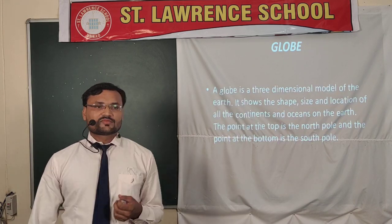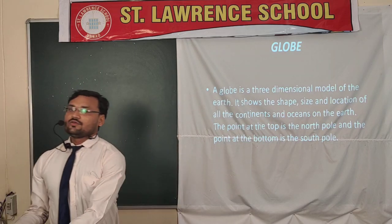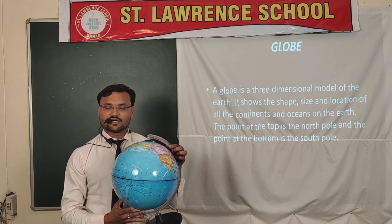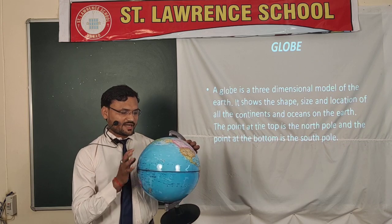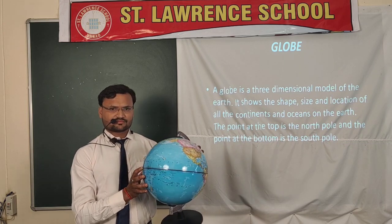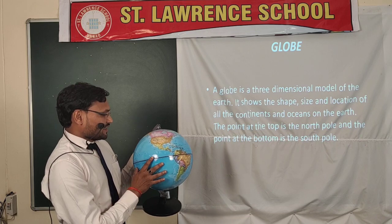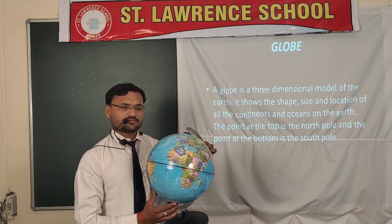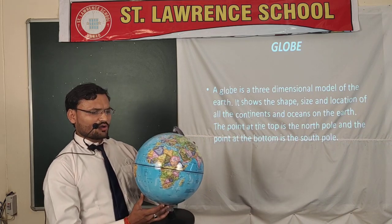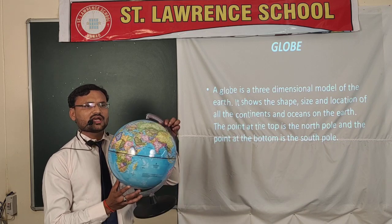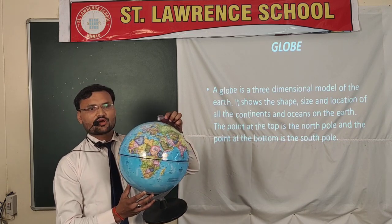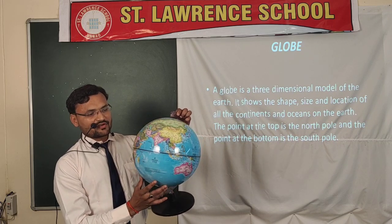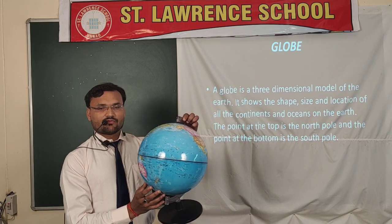Next is the globe. I want to show you the globe. You can see that this is the 3D model of the Earth in which we can show continents and oceans. It shows the actual size and shape of the Earth. This is called the actual model of the Earth that we can rotate in any direction and see the different continents and oceans one by one.